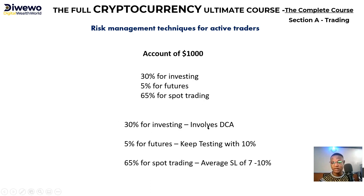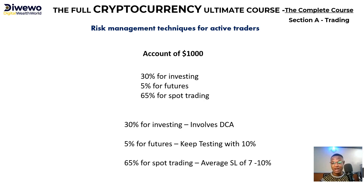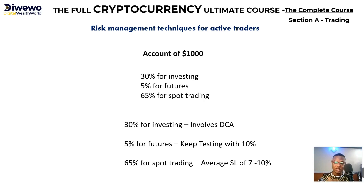The 30% investing section involves DCA. Right now the market is down and Bitcoin is just doing somehow, so you can start investing in Ethereum. I told some of my students to buy Ethereum with just some percentage of their 30% at around one thousand dollars, and right now Ethereum is at another level — I said you can sell. If Ethereum dumps back below one thousand dollars, we buy again. You don't buy with the full 30% all at once — it involves DCA, buying two or three times.